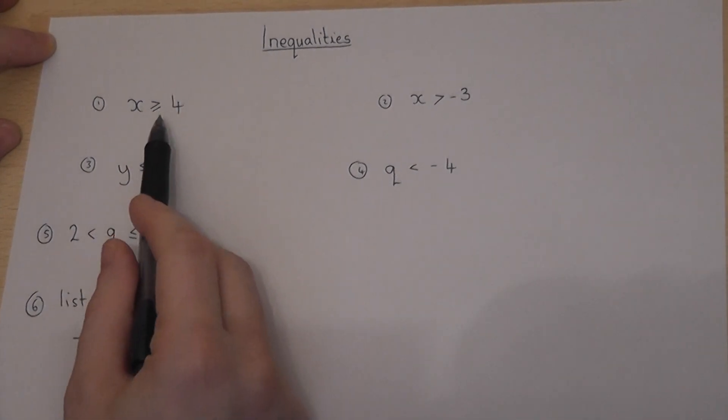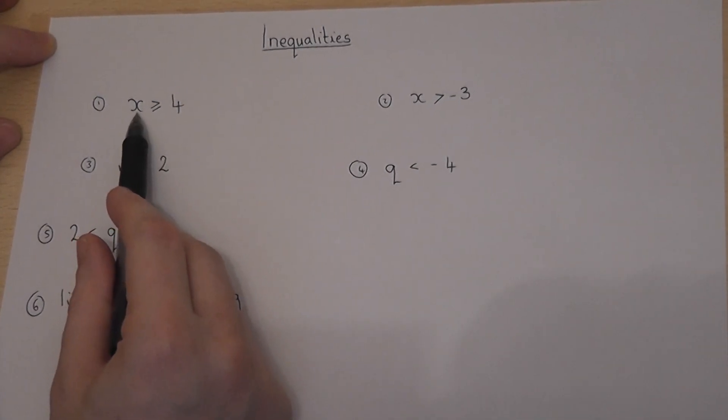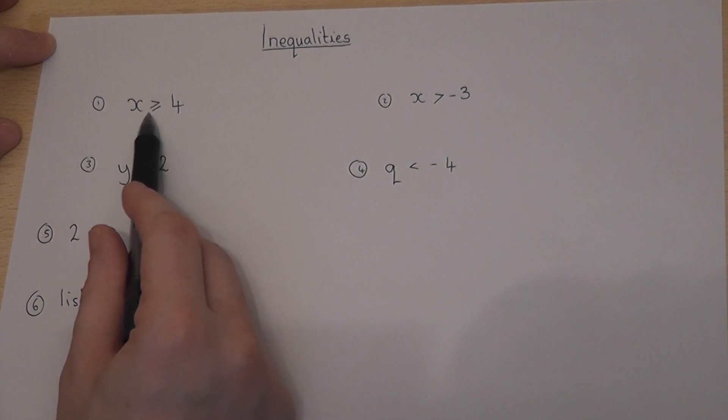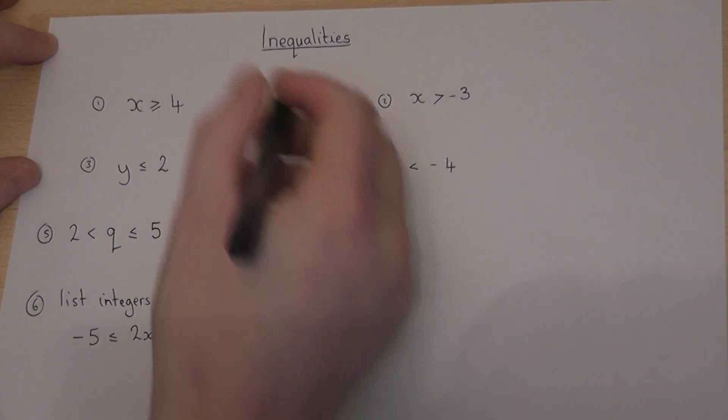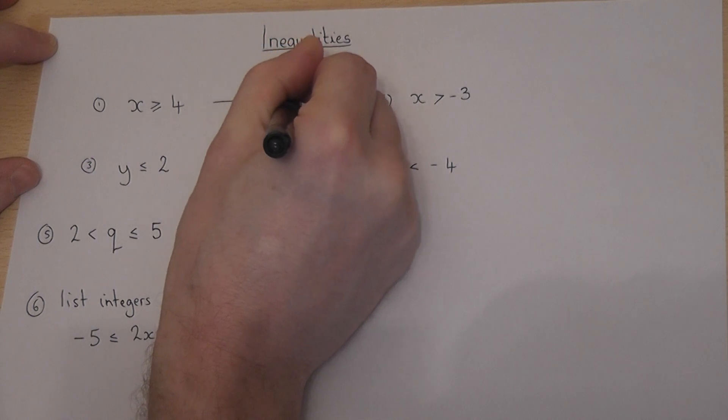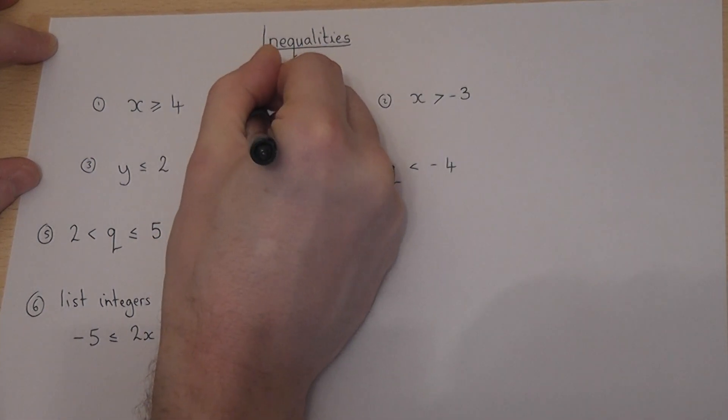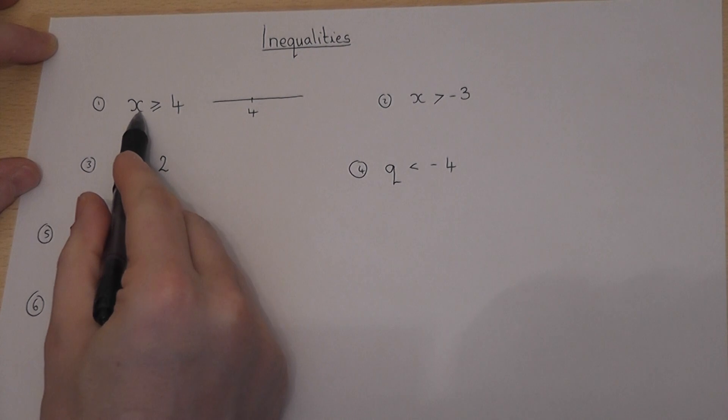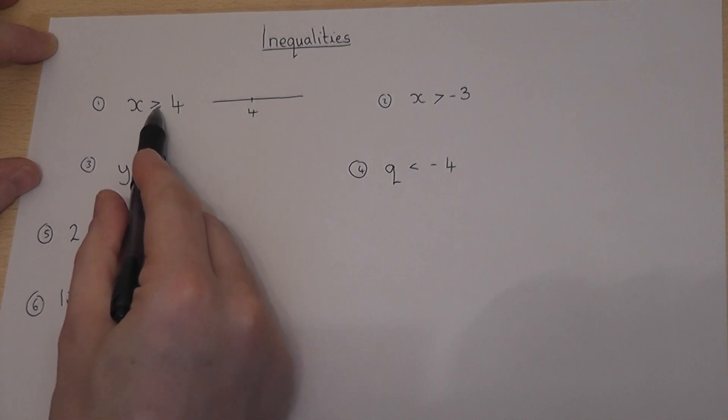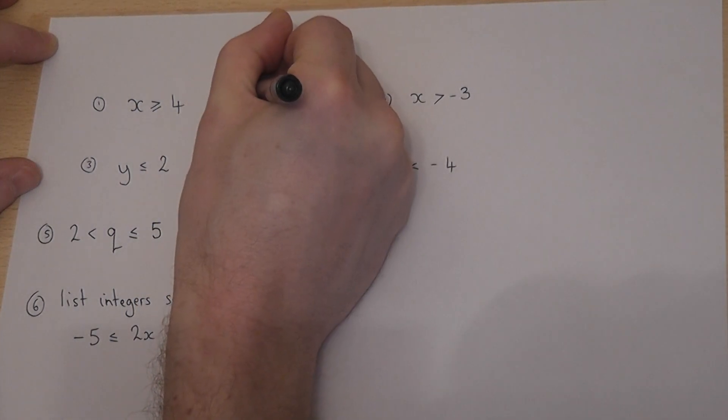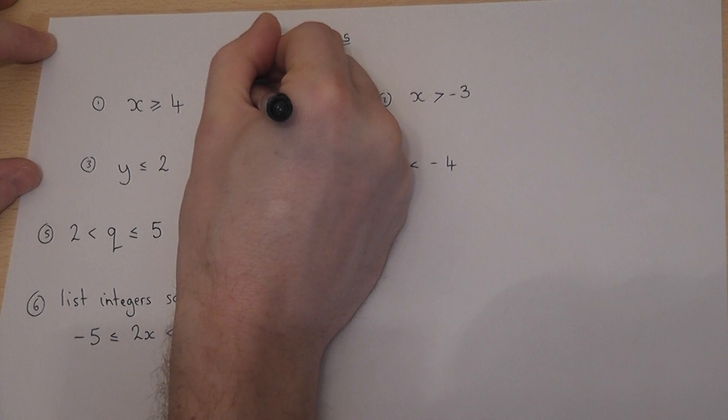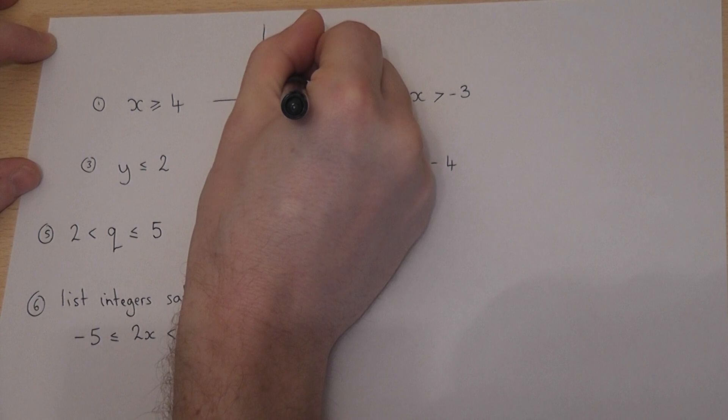Now, the first one means that x can be anything larger than and including 4. That second line there includes the 4. So if you imagine a number line, and if I put the number 4 here, then x can be anything bigger than and including the number 4. So I can put a circle above the 4, I can include 4, so I shade the circle in.